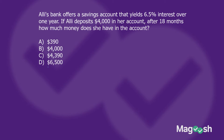Let's take a look at another example. Ali's bank offers a savings account that yields 6.5% over one year. If Ali deposits $4,000 in her account, after 18 months how much money does she have? Now it's not about interest she has to pay, but the interest she gains and adding it to the original $4,000. So she has 4,000 and what gets added is I = PRT.